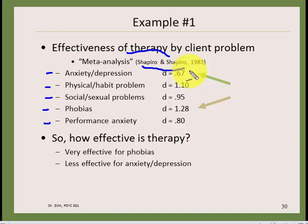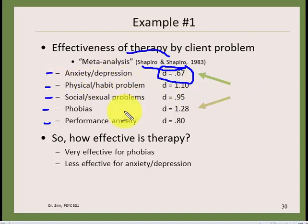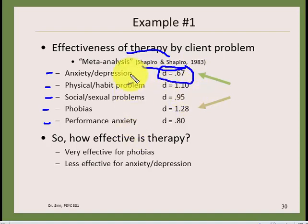With phobias there's a clear, narrow problem — fear of spiders, heights, or statistics professors — and therapists can apply desensitization training with great results. Anxiety and depression may be tied to biochemical issues requiring medication to fully treat, so therapy has an effect but perhaps not as large. The d statistic lets you compare where the independent variable — therapy — has a bigger impact across different conditions.